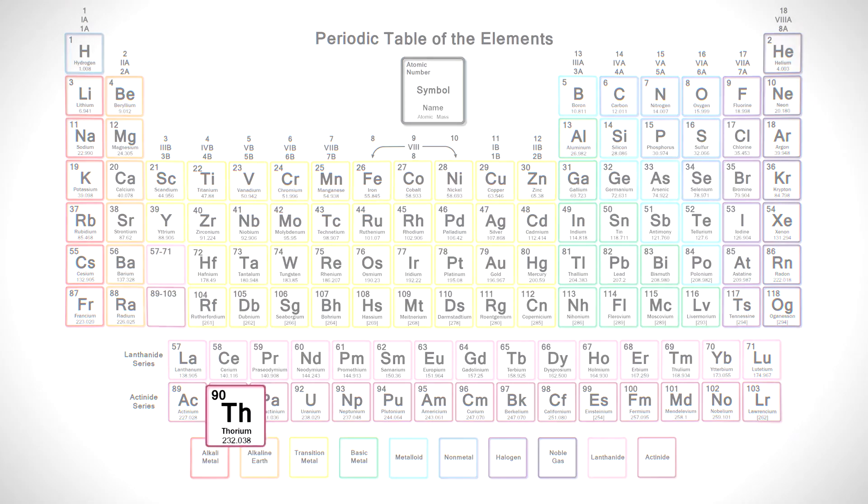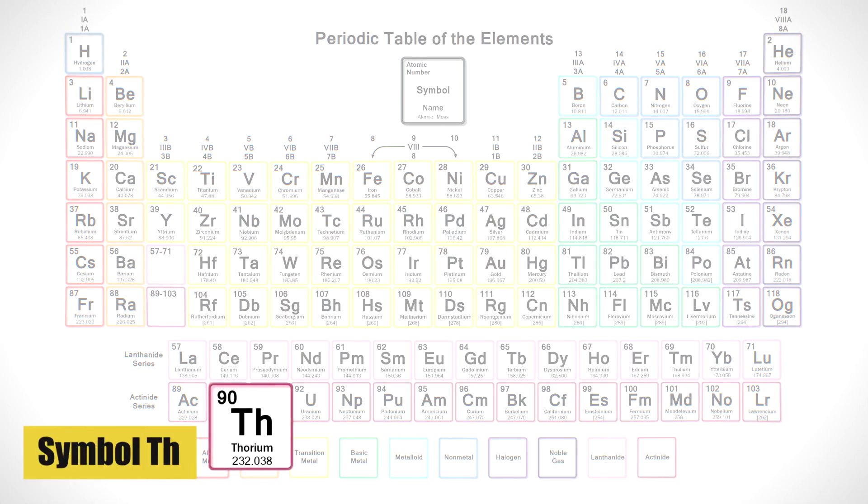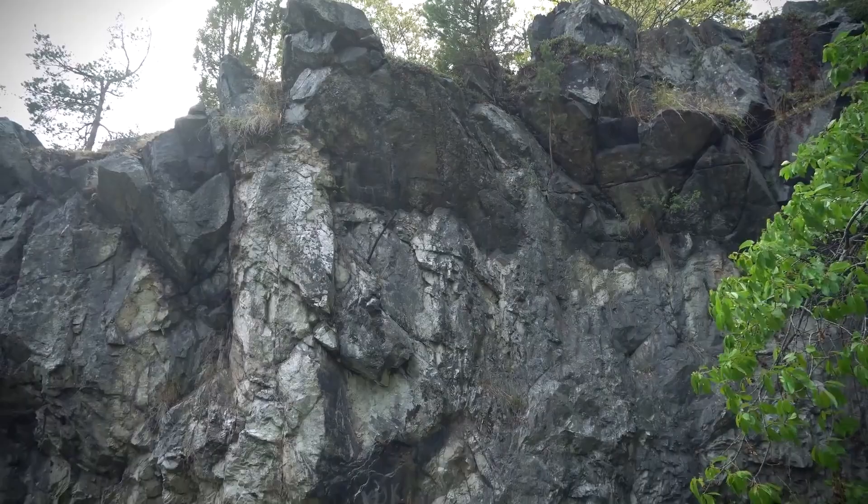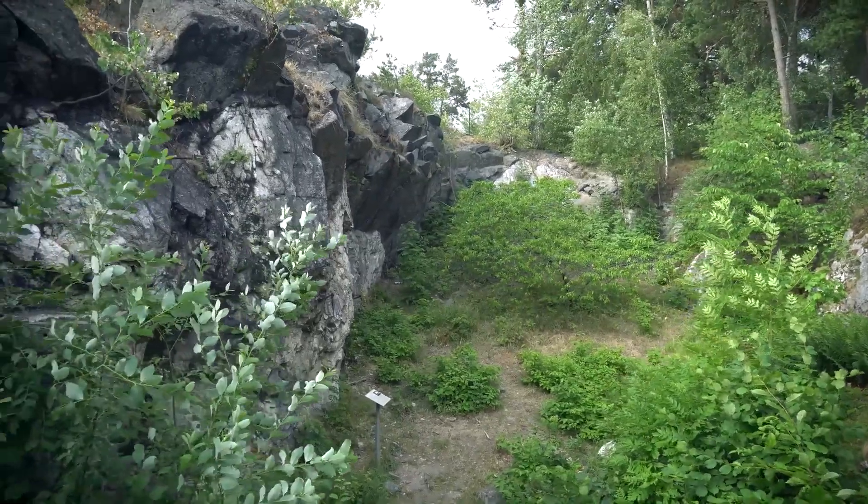Thorium is a naturally occurring radioactive chemical element with the symbol Th and atomic number 90. Thorium has a rich history dating back to the early 19th century when it was first discovered.